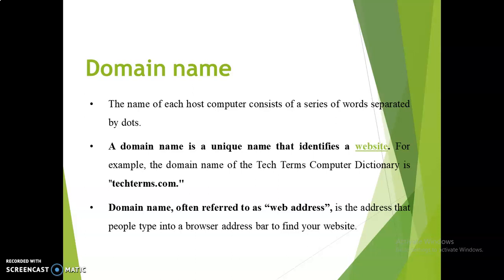Next is the domain name. IP address is used for identifying the computer; each computer in the internet is called a host. Domain name is used to identify the website. Examples include www.agu.com, www.facebook.com, google.com, and amazon.com — those are called domain names, or web addresses.